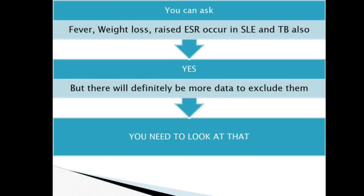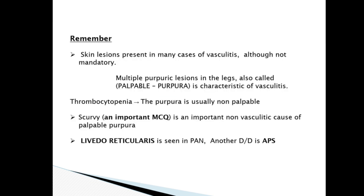You can ask that fever, weight loss, and raised ESR occur in SLE and TB also. Yes, but there will definitely be more data to exclude them. Remember, skin lesions are present in many cases of vasculitis, although it is not mandatory. Multiple purpuric lesions in the legs — also called palpable purpura — is characteristic of vasculitis. In thrombocytopenia, the purpura is usually non-palpable. An important MCQ: scurvy is an important non-vasculitic cause of palpable purpura.